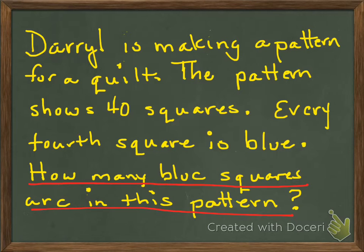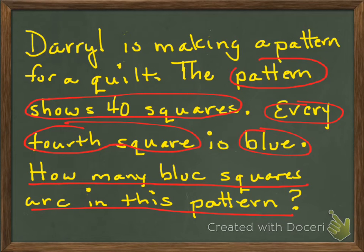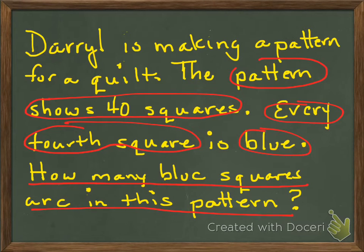Now, what information will you need to use to answer this? Let's go back and look at the problem again. I want you to circle what you need. If you circle the word 'pattern,' 'shows 40 squares,' and 'every fourth square is blue,' I think you're doing pretty well. So rather than creating this by hand, I'm going to use a grid to help us figure out how many squares in this quilt are going to be blue.